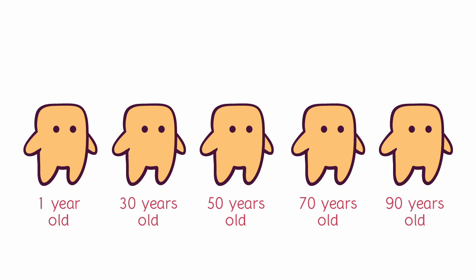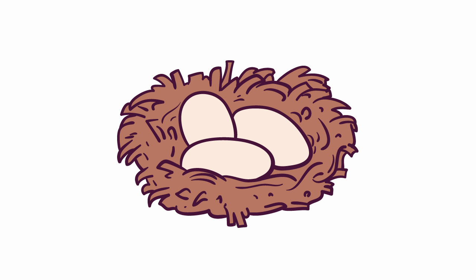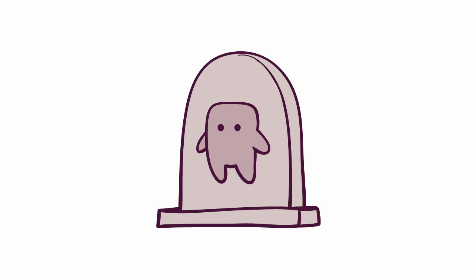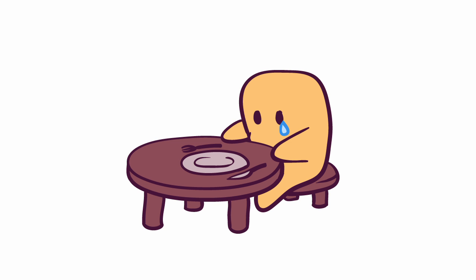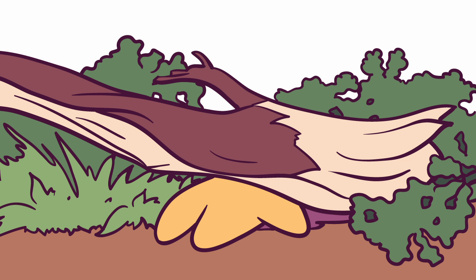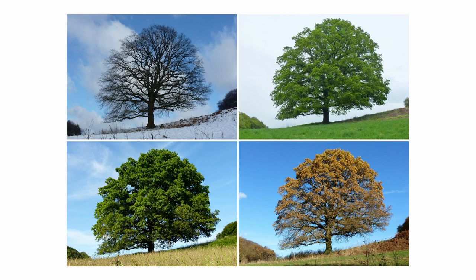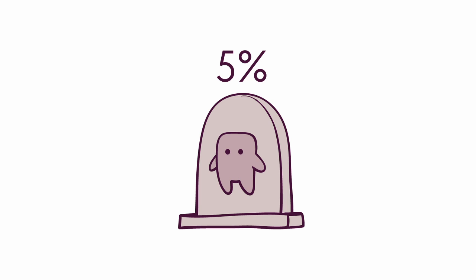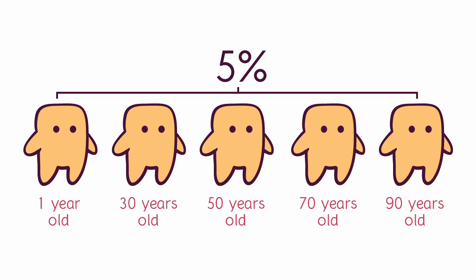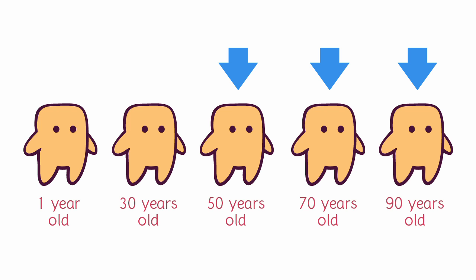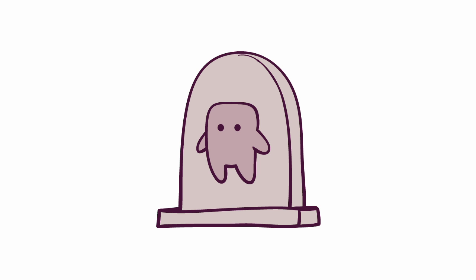These creatures start reproducing early in life and carry on laying a new clutch of eggs every year, until they get killed by some external cause — like getting eaten, starving to death, or having a tree branch fall on top of their head. In any given year, there is a 5% chance of dying. This rate stays constant no matter how old an individual is, and by a certain age, some sort of accident will have definitely caught it.